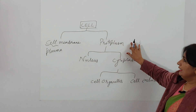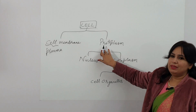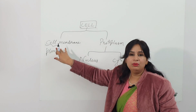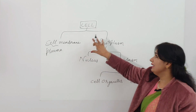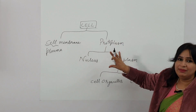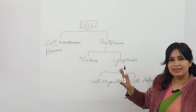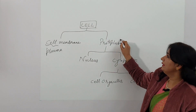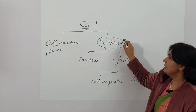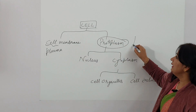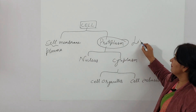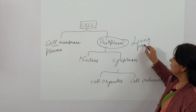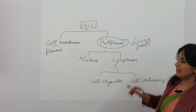Next it is divided into protoplasm. The outer membrane is the cell membrane, and inside the cell membrane, whatever is there — the living part of the cell — is known as protoplasm. This is the living part of the cell.